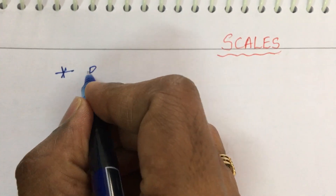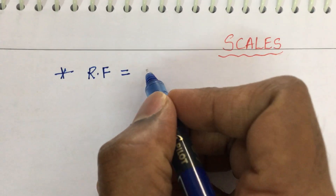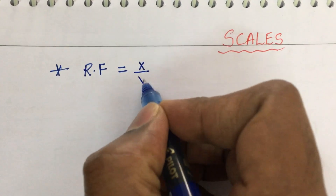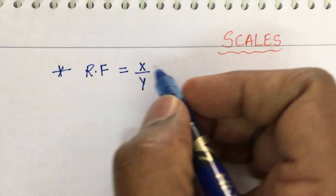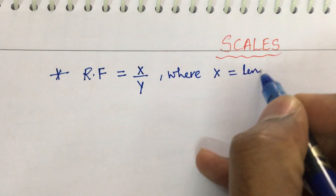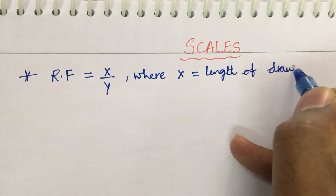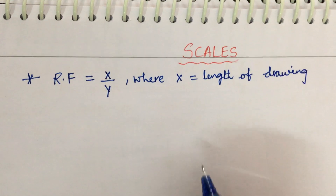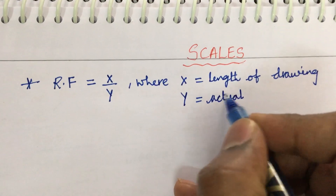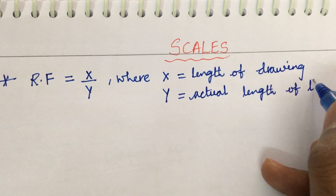There are two types of scales: a plane scale and a diagonal scale. First, you need to work out the representation factor, also called the scaling factor. It is written as a ratio x/y, where x is the length on the drawing — whatever length we plot on the drawing sheet — and y is the actual length of the object.